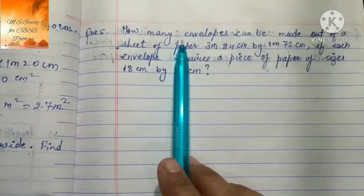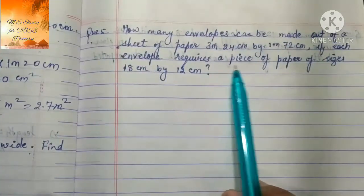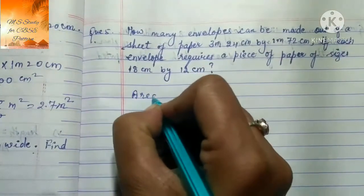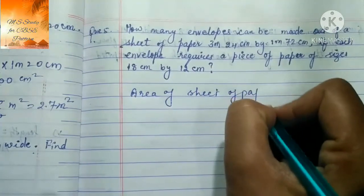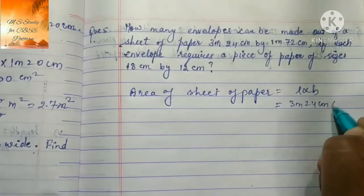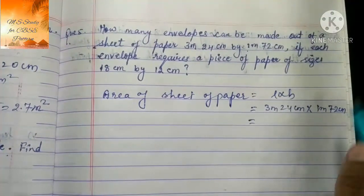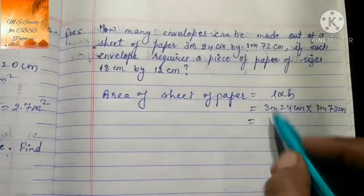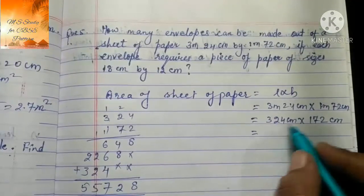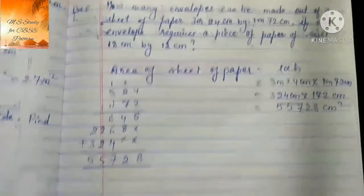Question number 5: How many envelopes can be made out of a sheet of paper 3 meter 24 cm by 1 meter 72 cm, if each envelope requires a piece of paper of size 18 cm by 12 cm? Area of sheet of paper = length × breadth = 324 cm × 172 cm = 55,728 cm²।